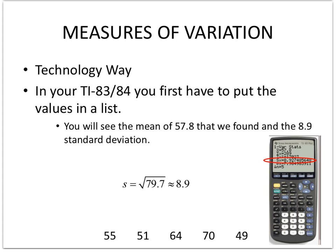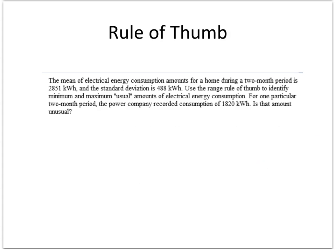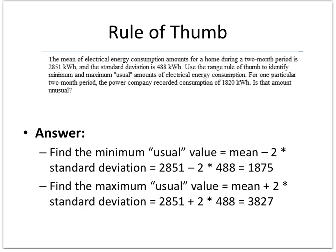All right, the mean of electrical energy consumption amounts for a home during a two-month period is 2,851 kilowatt-hours, and the standard deviation is 488 kilowatt-hours. Use the range rule of thumb to identify a minimum and a maximum usual amount of electrical energy consumption. For one particular two-month period the power company recorded consumption of 1,820 kilowatt-hours.